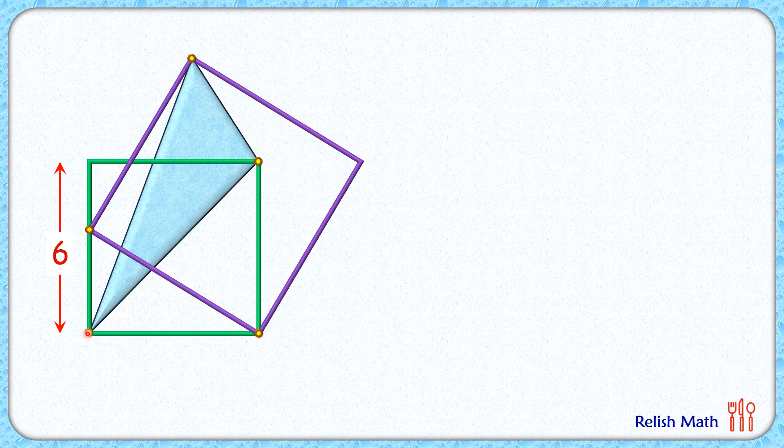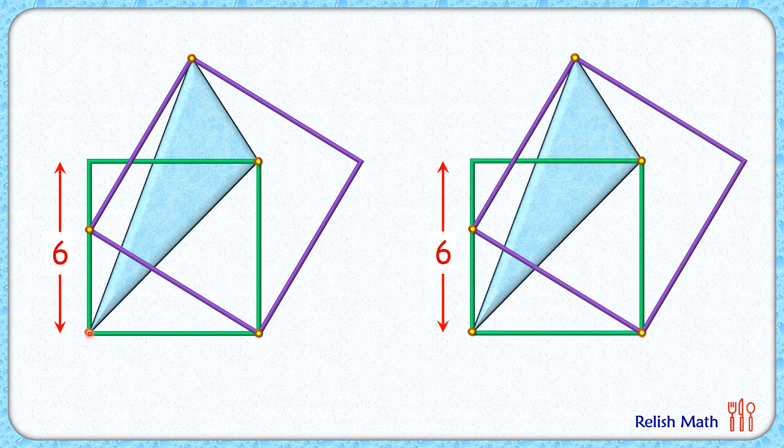So to see it, let's make a copy of this figure first. Now let's rotate this purple square slightly anti-clockwise and reduce its size so that this vertex will lie on the side of the green square and keep this vertex fixed.